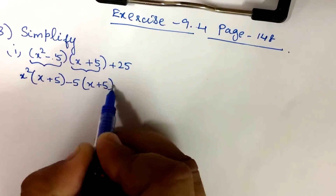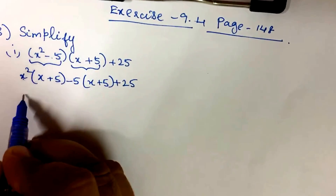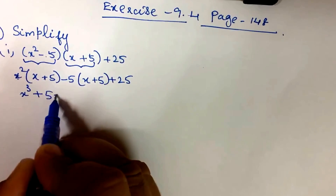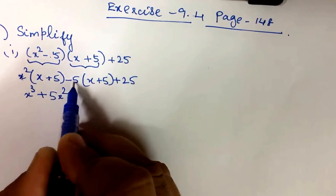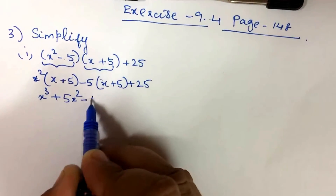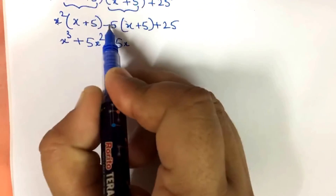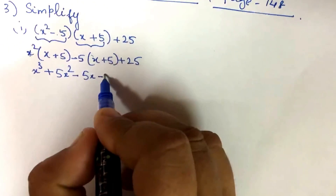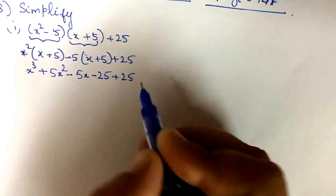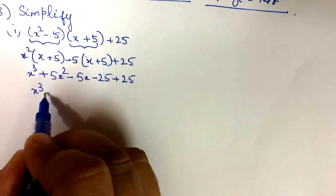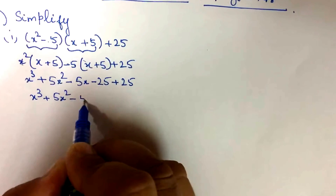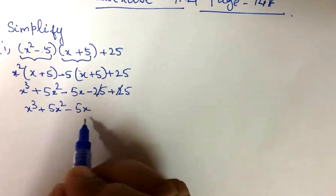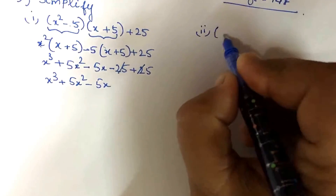x² into x is x³, plus x² into 5 is 5x², minus 5 into x is 5x, minus 5 into 5 is 25, plus 25. So: x³ + 5x² - 5x + 25 - 25 = 0, giving x³ + 5x² - 5x.